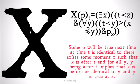We can logically define this in terms of precedence: P will be true next time at time T is identical to there existing some moment X such that X is after T, and for all Y, Y being after T implies that X is before or identical to Y, and P is true at X. All this is saying is that P is true in exactly the next instant following this one.